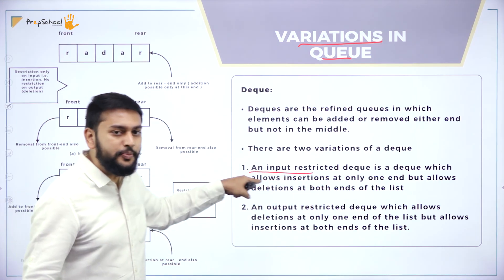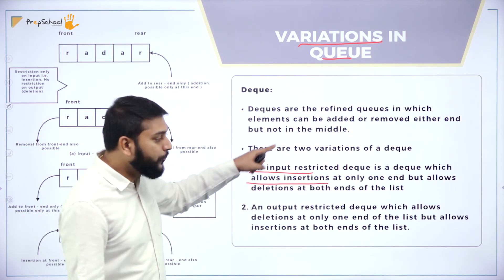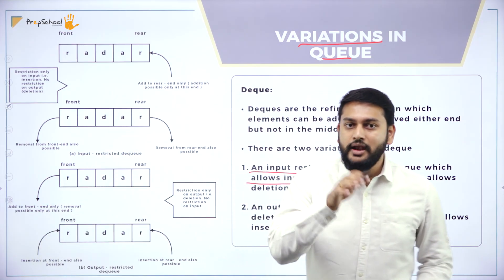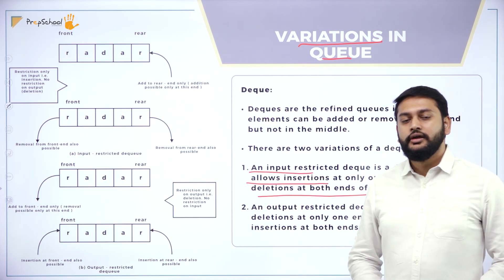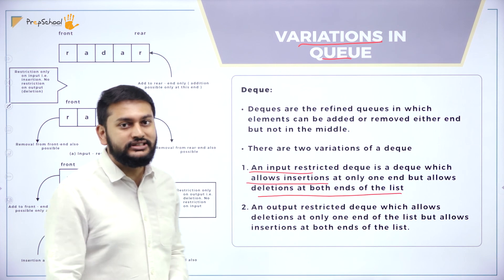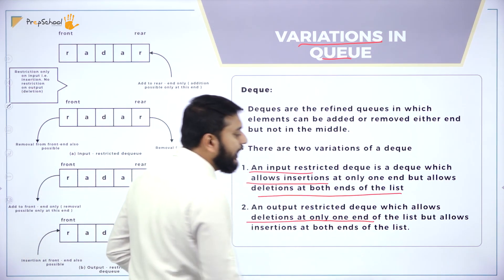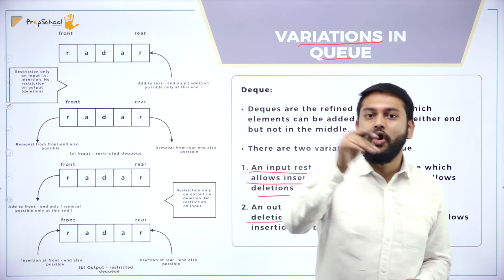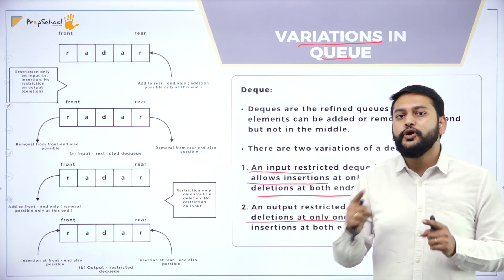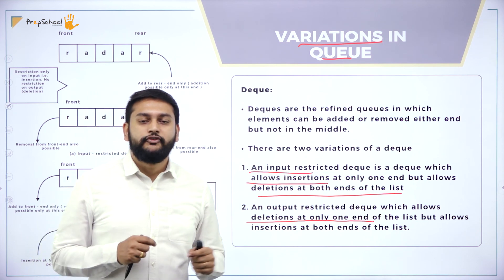An input restricted deque means deletion is allowed at both ends. The opposite is the output restricted deque — only one side allows output, so deletion happens only at one end, but insertion can happen at both ends. If the output is restricted, you can perform the output operation at only one end. If the input is restricted, you can perform the input at only one end but deletion at both ends. This is the variation of queues.